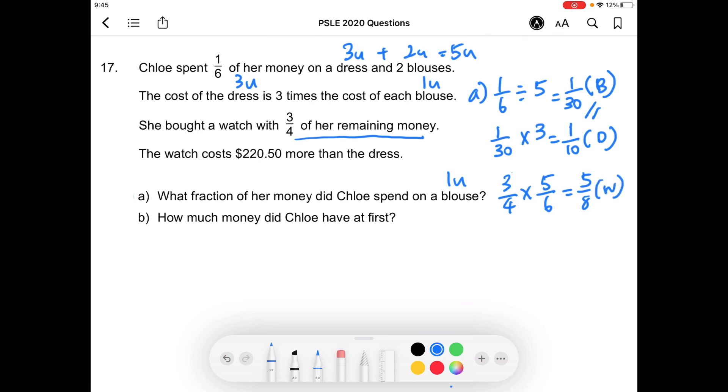Given that the watch cost $220.50 more than the dress, we have to find out the difference in fraction between the watch and the dress first. The answer here is twenty-one over forty. You can interpret this as the difference between a watch and a dress is twenty-one units, and the total amount of money that Chloe has is forty units at first.